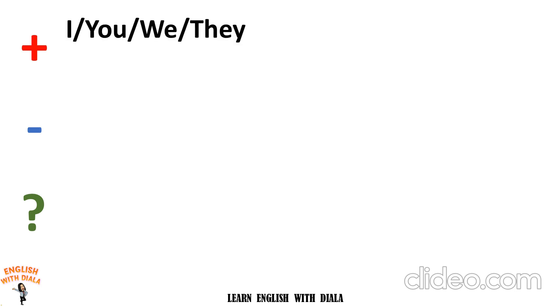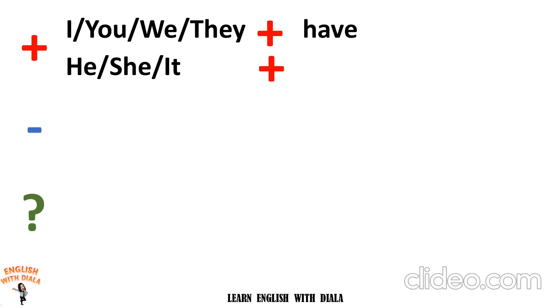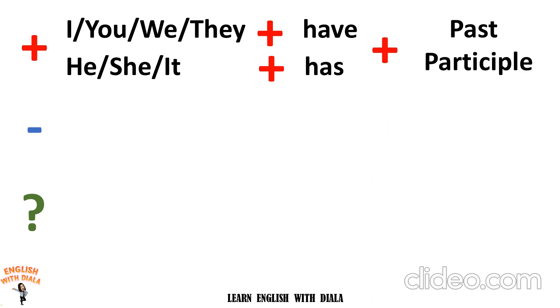As an example, if I want to change into the affirmative or positive form, I need to add the subject — I, you, we, they — using 'have', and the singular ones — he, she, it — using 'has'. In addition to this, we need to add the past participle form of the verb.